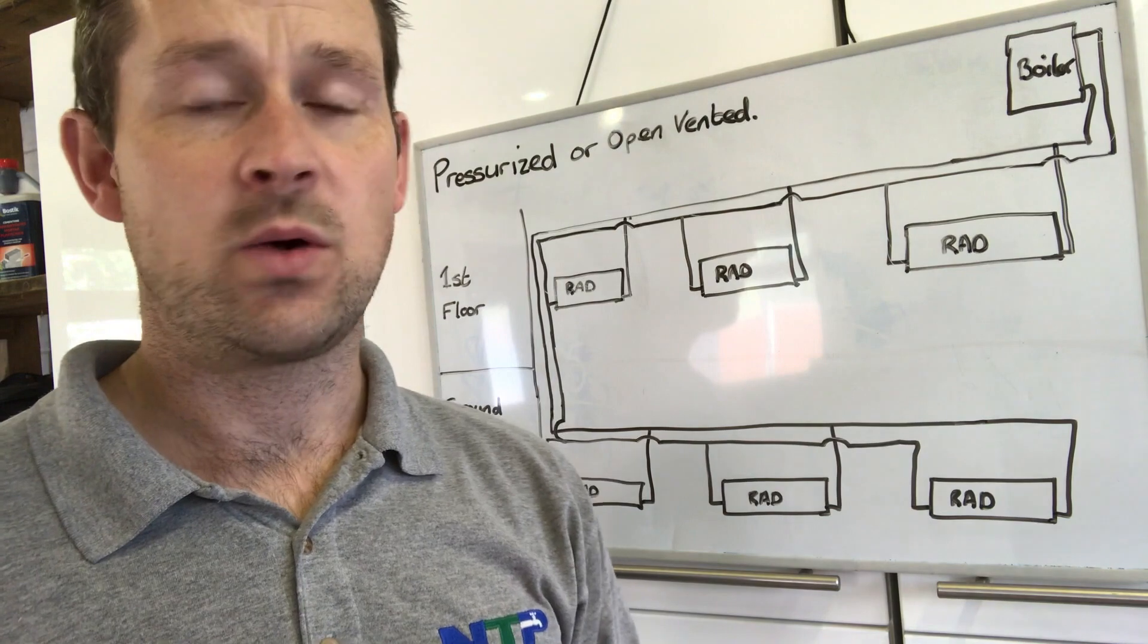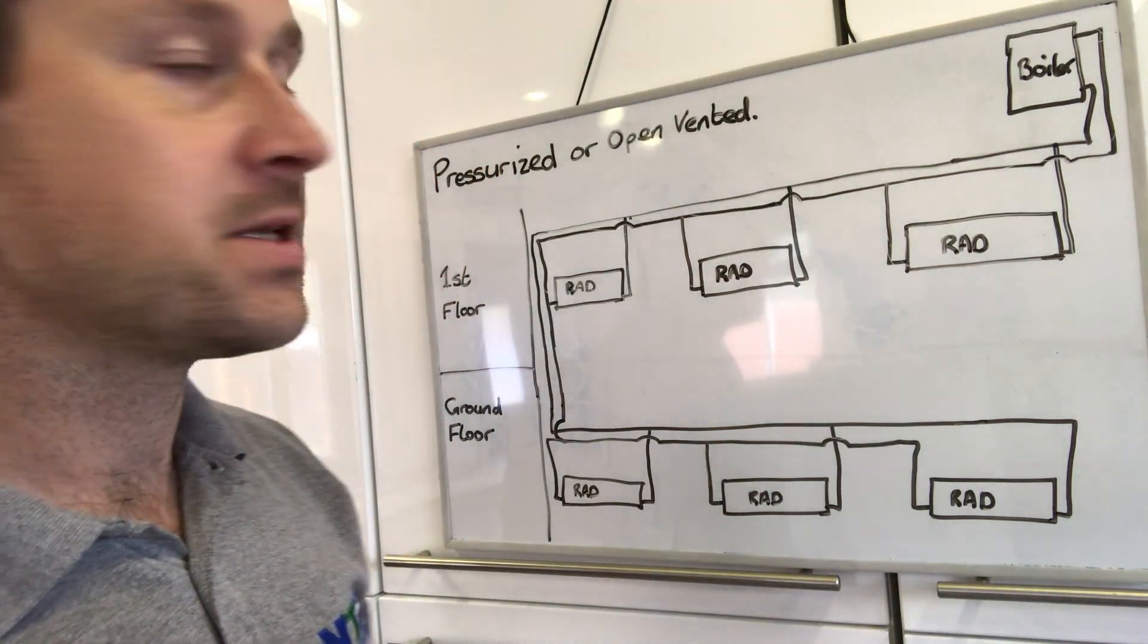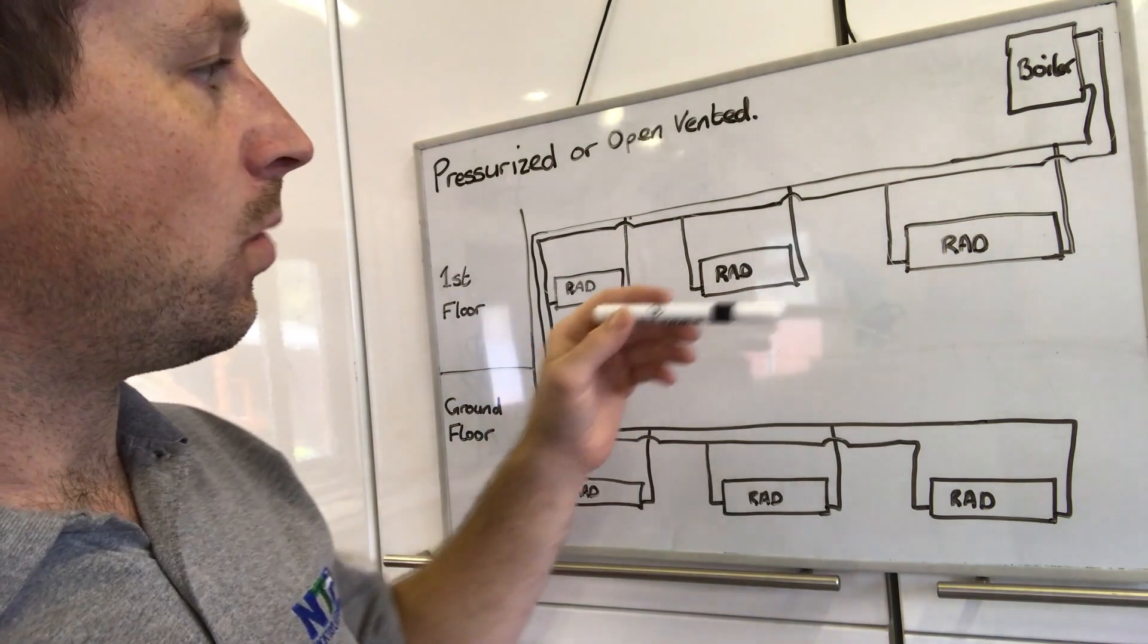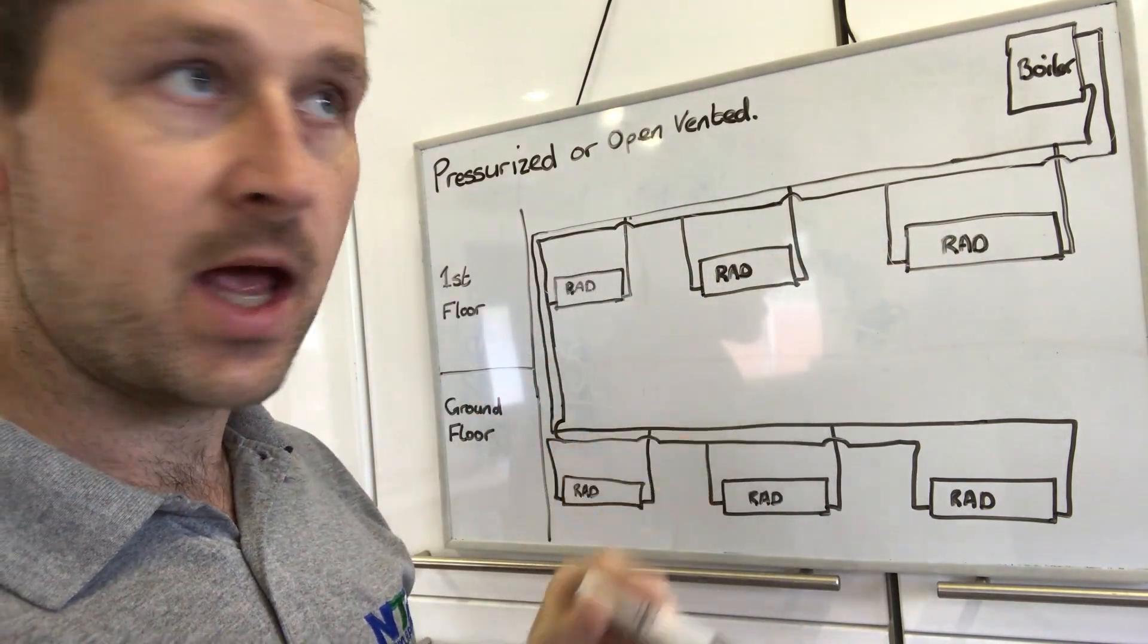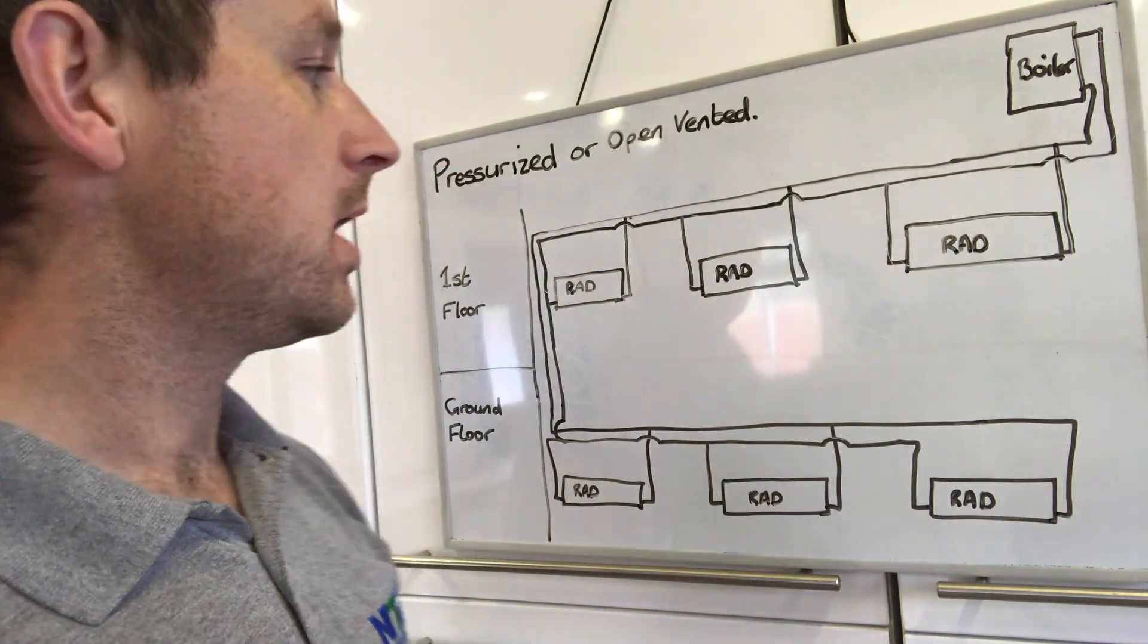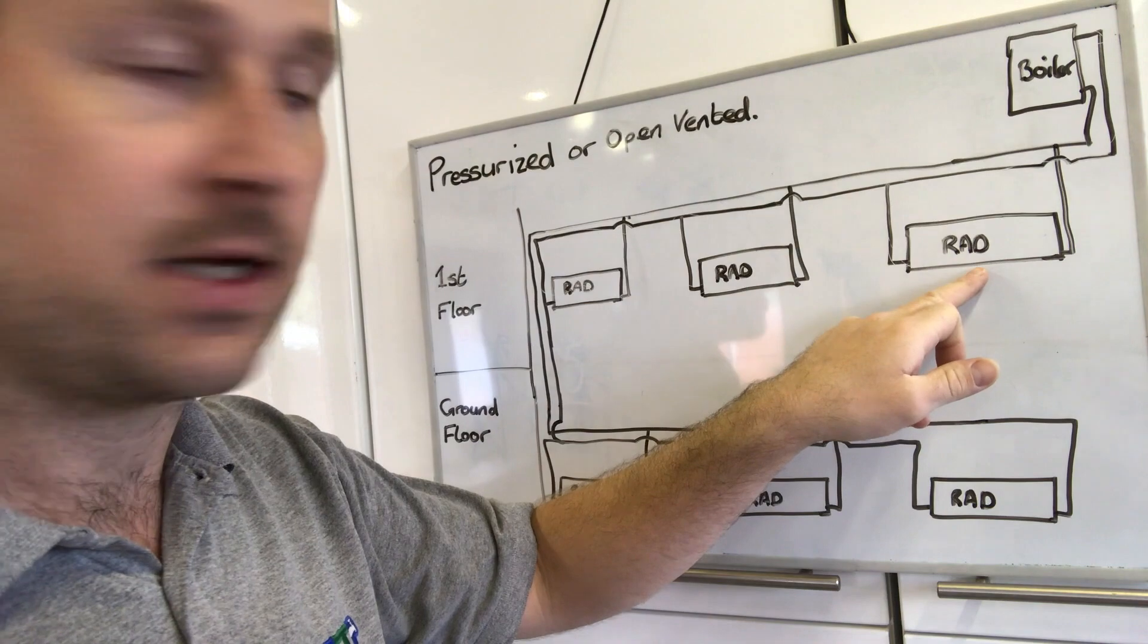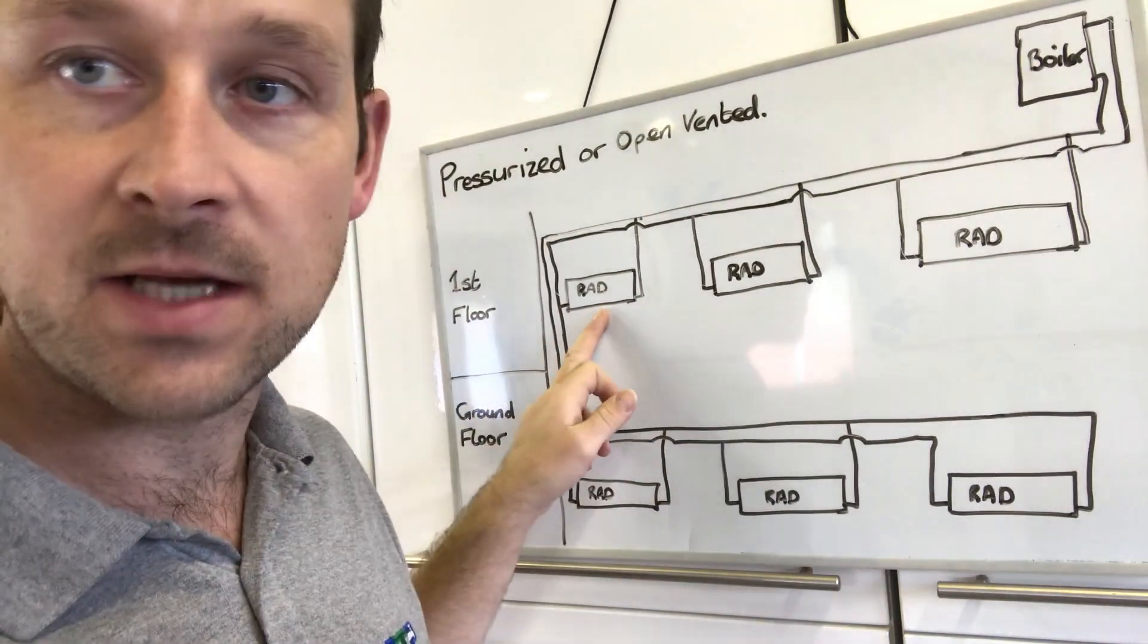So the first question is why? Why do we do this? What's the whole point of it? The answer to that is we want to get each of these radiators around your house the same temperature and the most efficient. We don't want this radiator here being 60 degrees, this one being 10 degrees, and this one being 30 degrees.